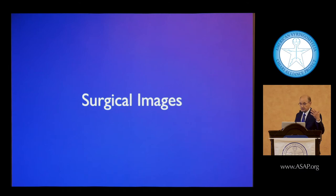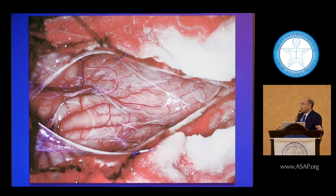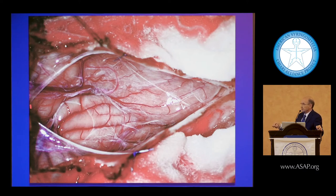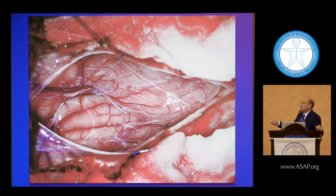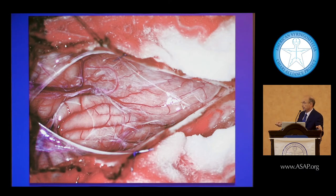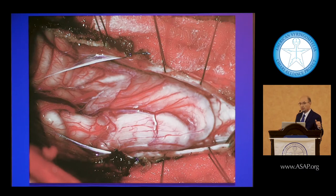Looking at surgical images: we open up, the patient's head is here, face down, and this is the surgeon's view with the dura open. This is the arachnoid. We can see that the right tonsil is crowding out the other tonsil. Even an intradural approach finds this tonsil wanting to occupy that space. So we're going to have to shrink and reduce the size of that tonsil.